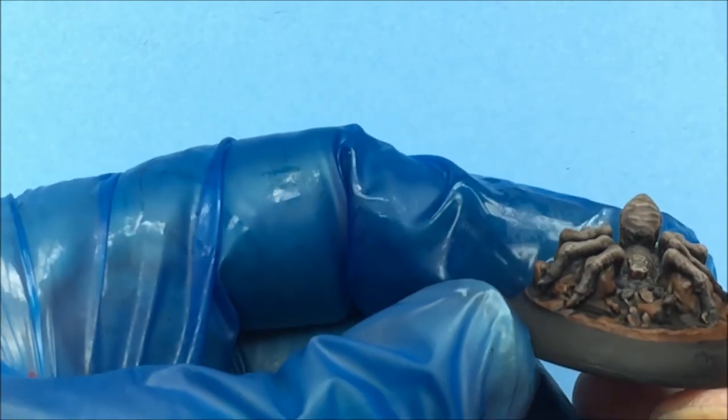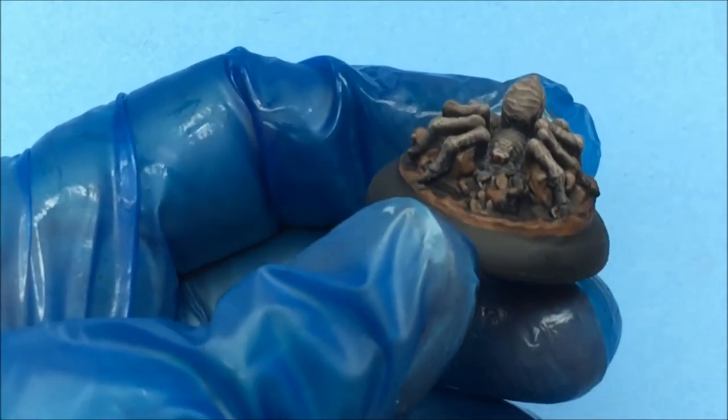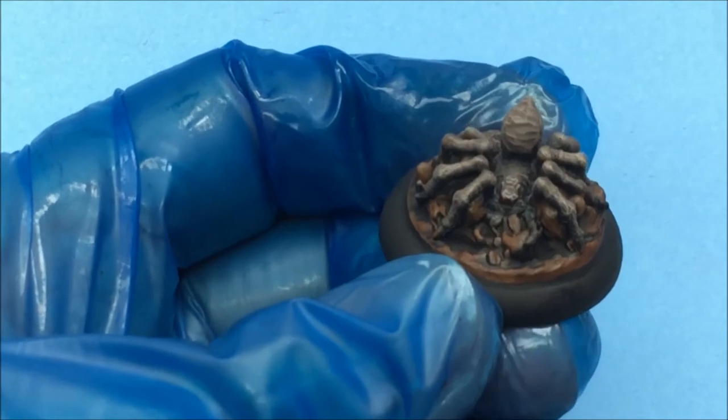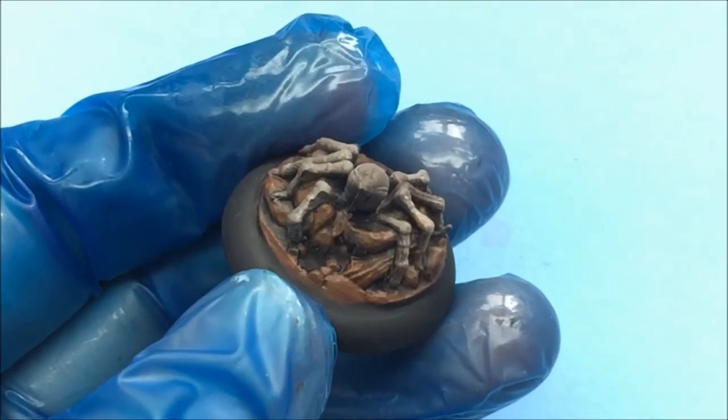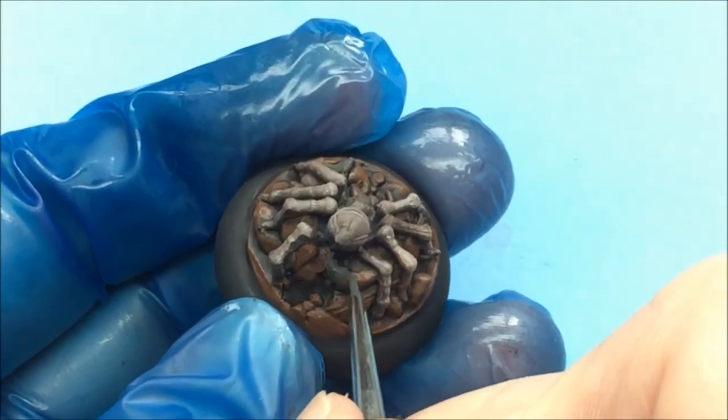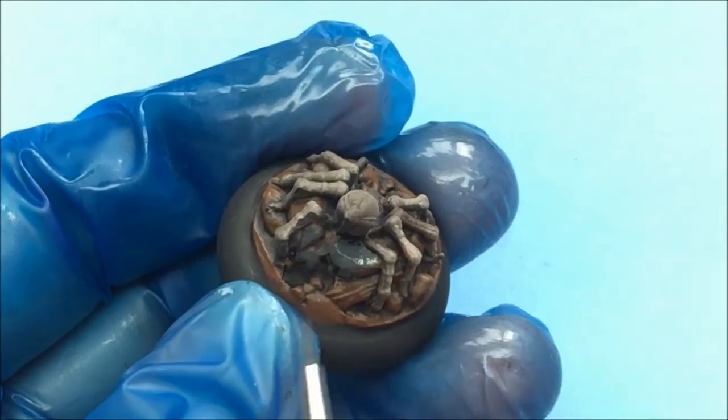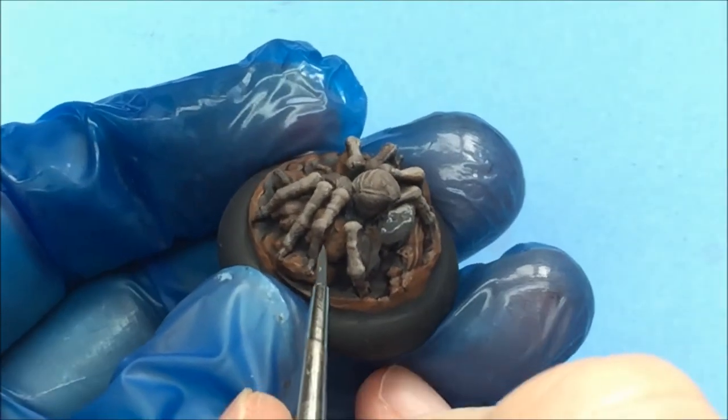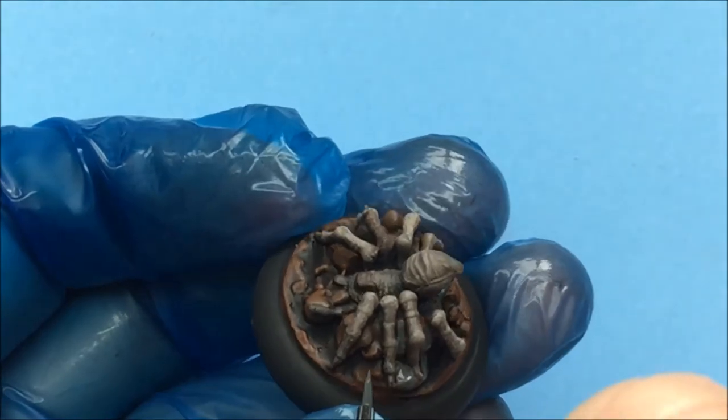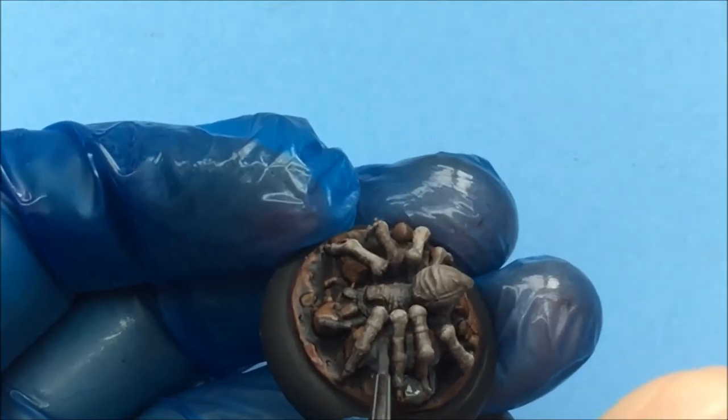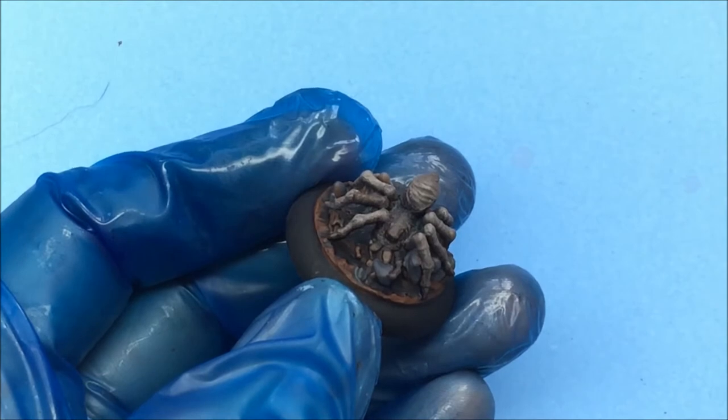So what's left to do now is the stone work so we'll swap to some dark blue gray next. We're just going to apply this to all the stony parts of the base. There's quite a bit on the larger one not so much on the little guys. It's just a basic base coat nothing special to see so we'll stop it there I'll carry on around the base.